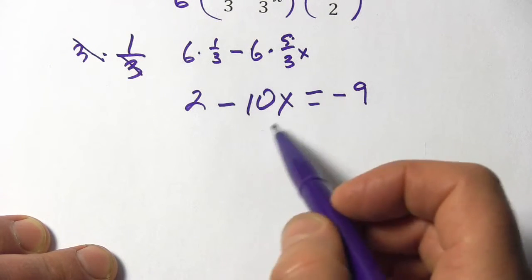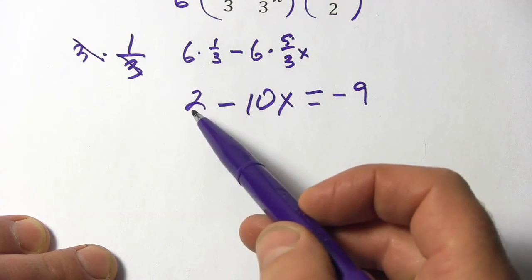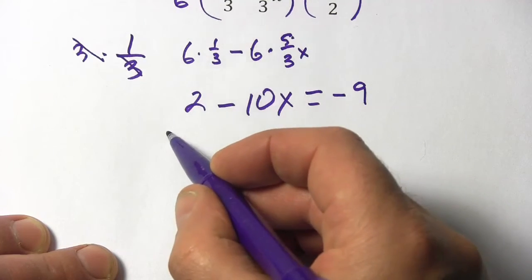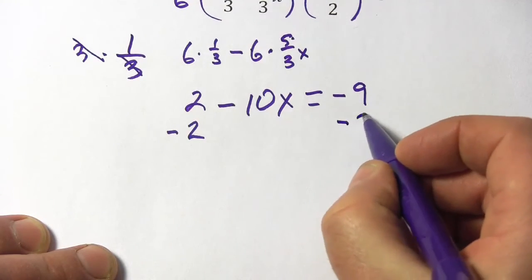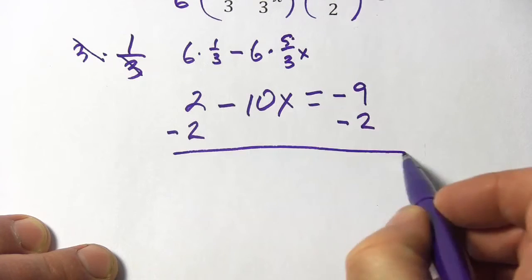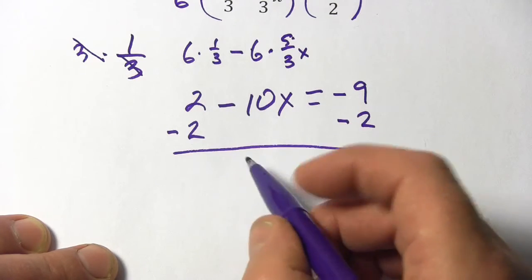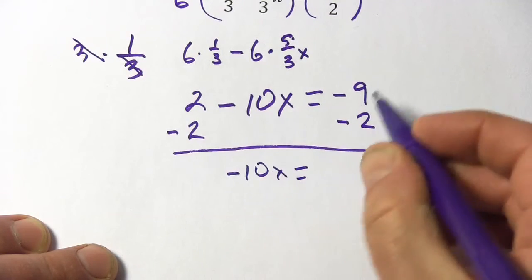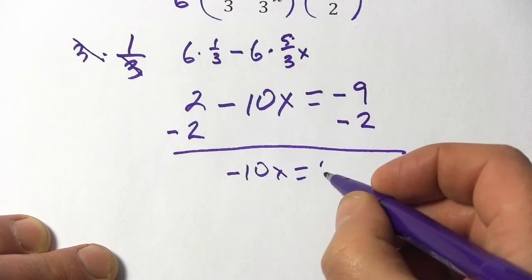Now we've got our x term over here. We've got a 2 hanging out here. I want to get rid of this 2. So I'm going to subtract 2 from both sides. This is 0, and then negative 10x equals negative 9 minus 2. That's negative 11.